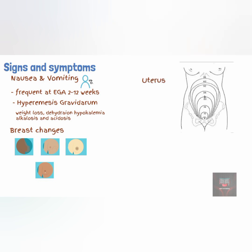The uterus increases in size throughout pregnancy. By week 12 of gestational age, the uterus becomes palpable above the pubic symphysis. By week 16, it is usually at the midpoint between the pubic symphysis and the umbilicus. By the 20th week, the fundus is at the umbilicus. By week 28, it is usually 6 cm above the umbilicus. At 32 weeks, it is 6 cm below the xiphoid process. By the 36th week, it is 2 cm below the xiphoid process, while at 40 weeks, it is usually 4 cm below the xiphoid process.